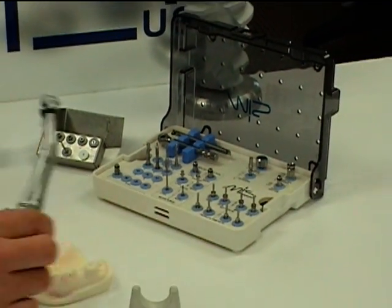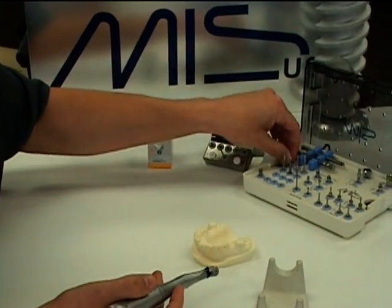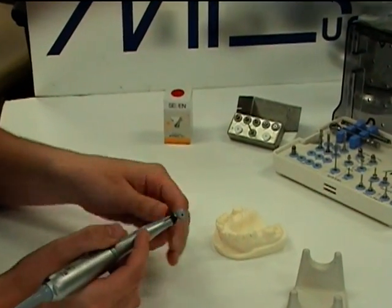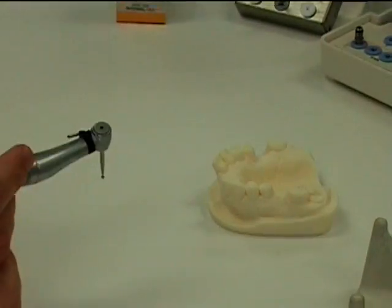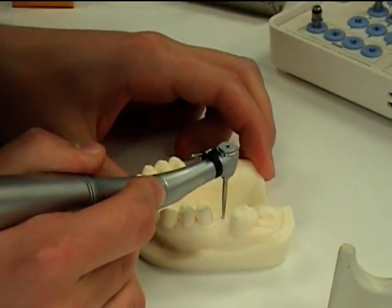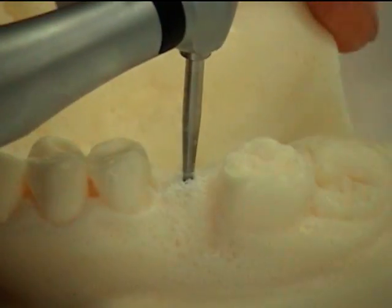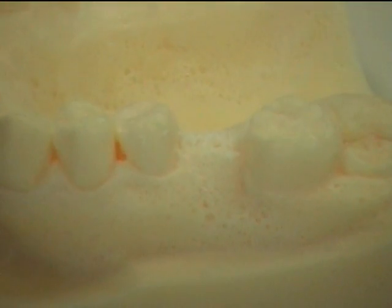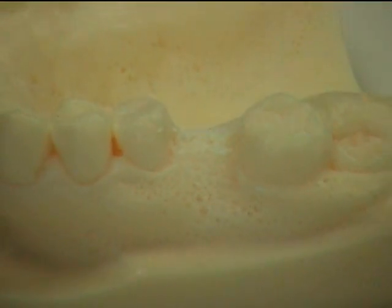So to begin, first we need to use a marking drill to create the spot where we're going to drill our osteotomy.